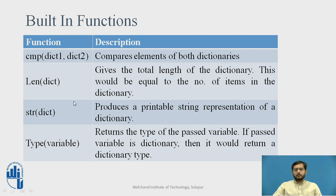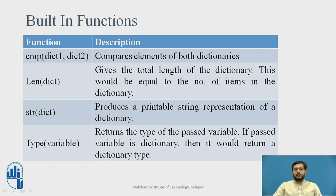Now there are some built-in functions for dictionary. The first function is to compare two dictionaries, whose syntax is cmp into brackets — you have to pass both the dictionaries you want to compare. Then, to find the length of the dictionary, use the len function. To produce a printable string representation of a dictionary, you can use the str function passing the dictionary name as a parameter. If you want to find out the type, use the type function — as a parameter give the dictionary name, it will return you the type of the passed variable. If the passed variable is a dictionary, it would return you a dictionary type.